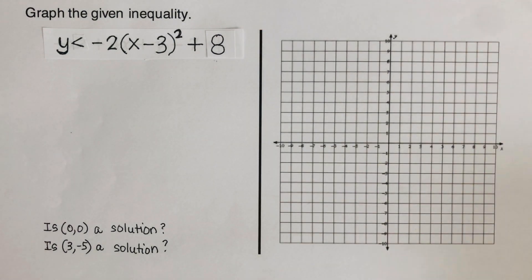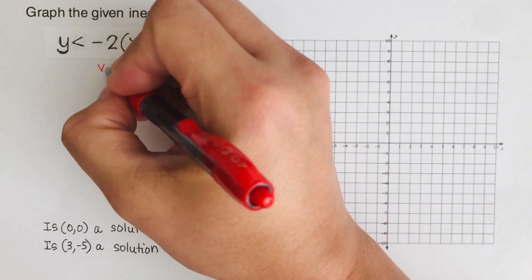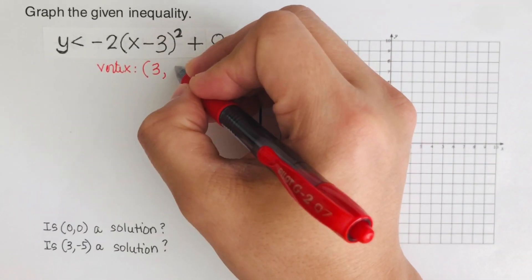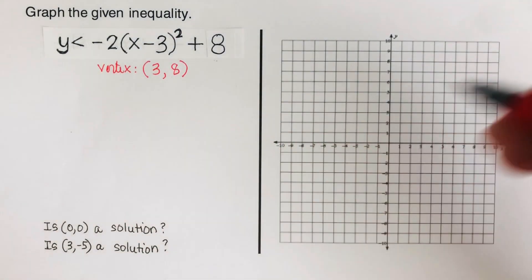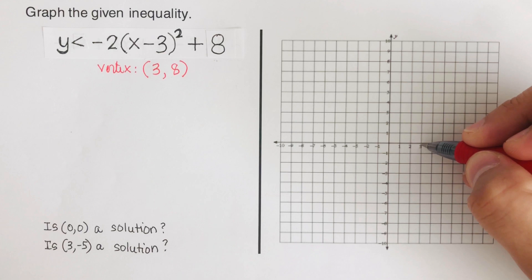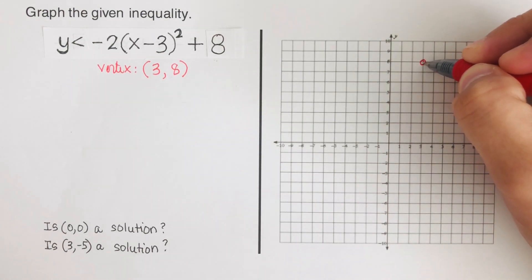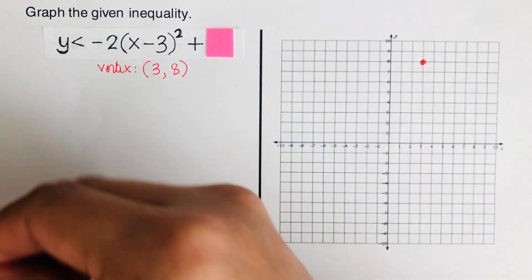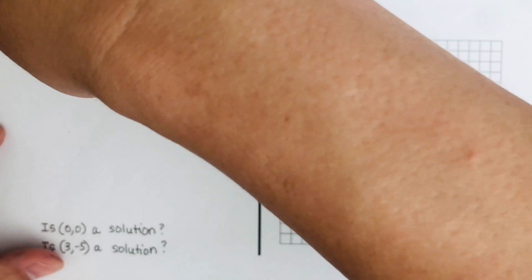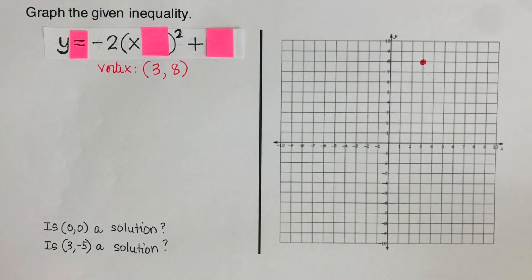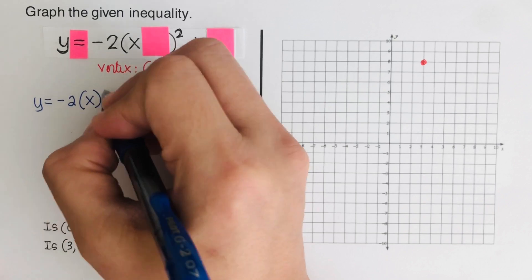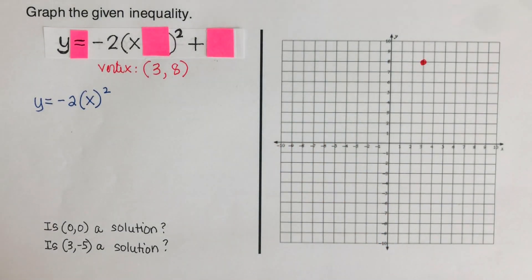For the second example, we determine the vertex again — switch and keep — so that would be positive 3 and positive 8. We plot the vertex at (3, 8). The next step is to write the working equation: we cover the h and k, and the leftover equation is y = −2x².